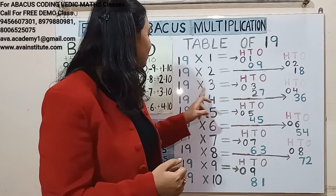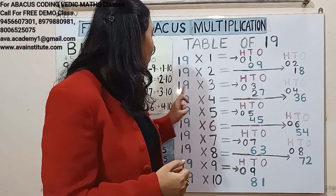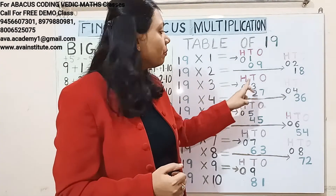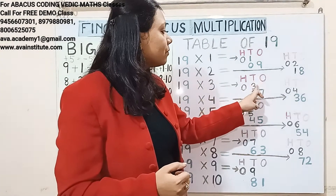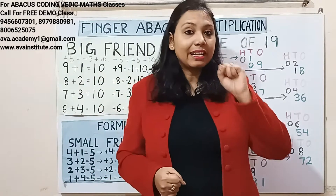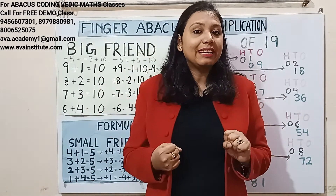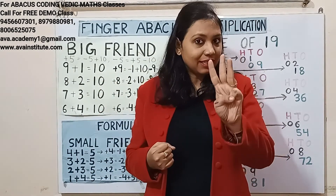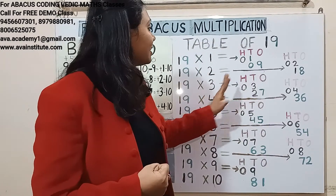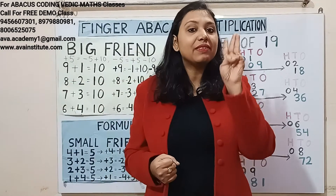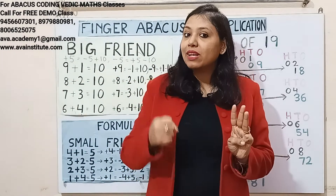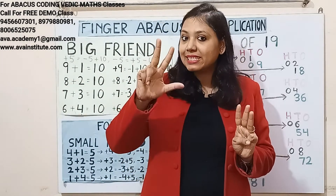Next, 19 threes are: 1 three is 3 — in hundreds we represent 0 and in tens we represent 3. 9 threes are 27 — in tens we represent 20 and in ones we represent 7.